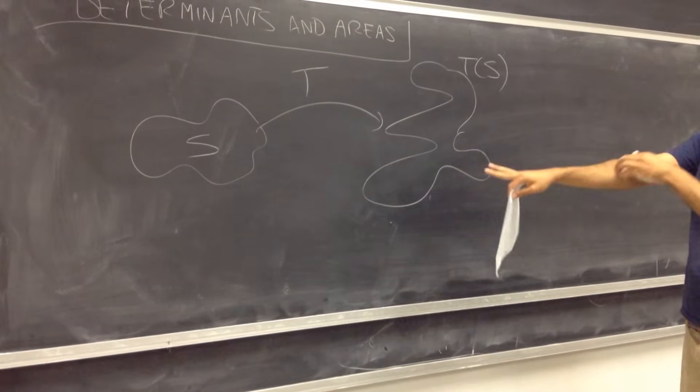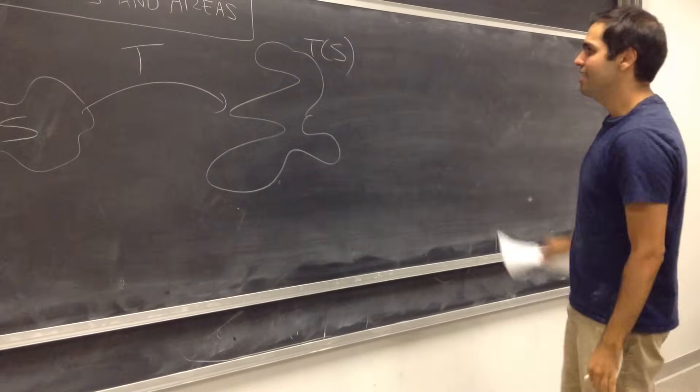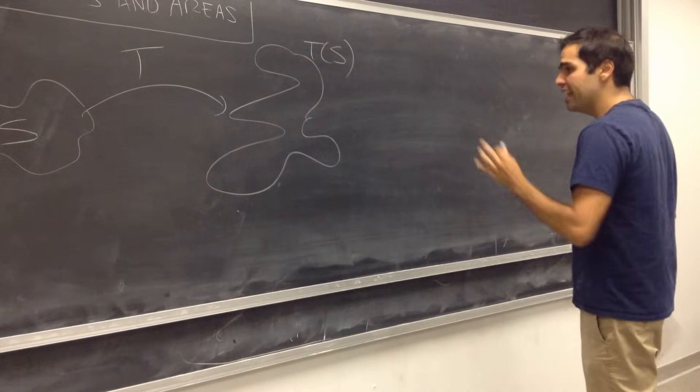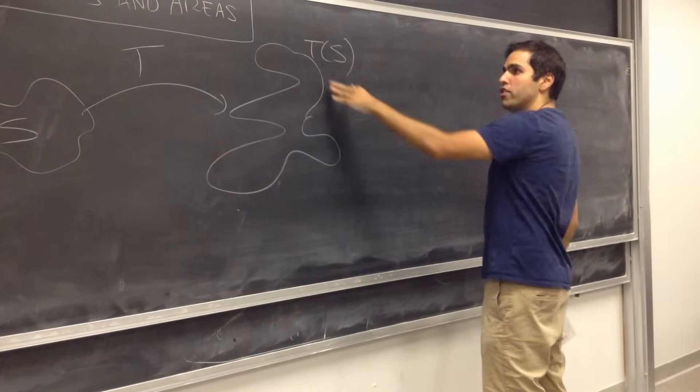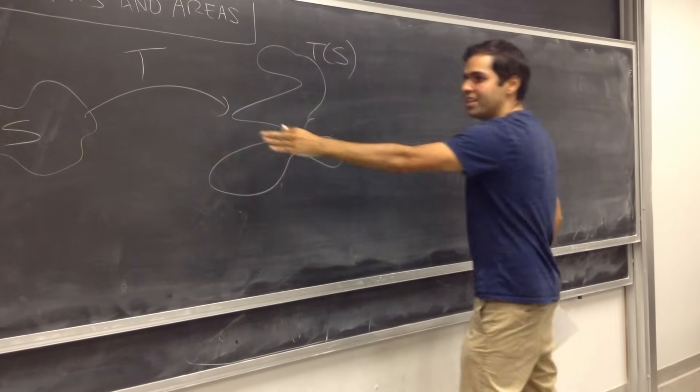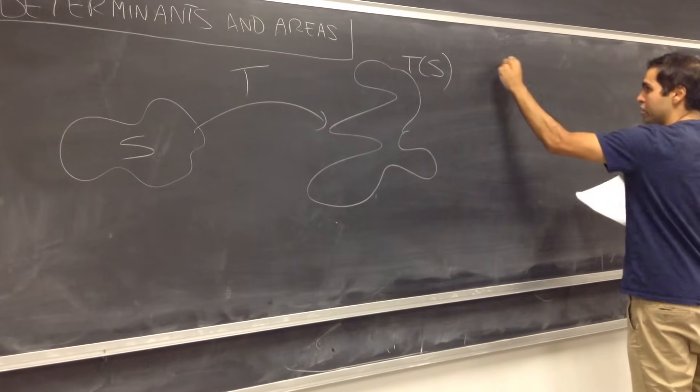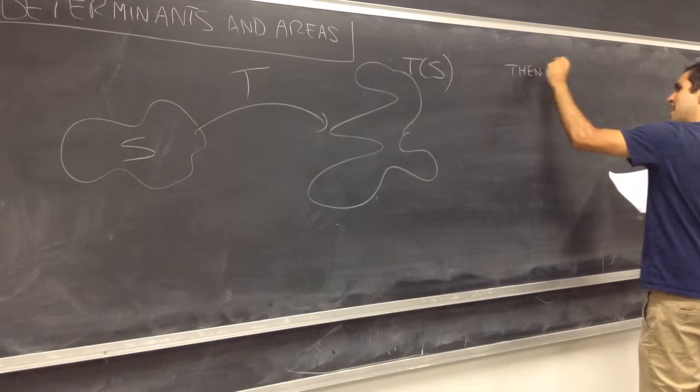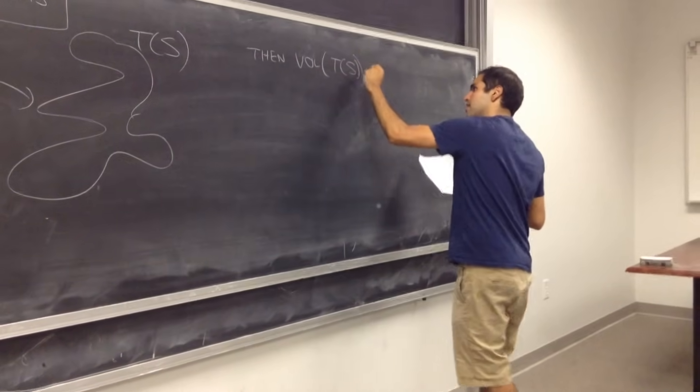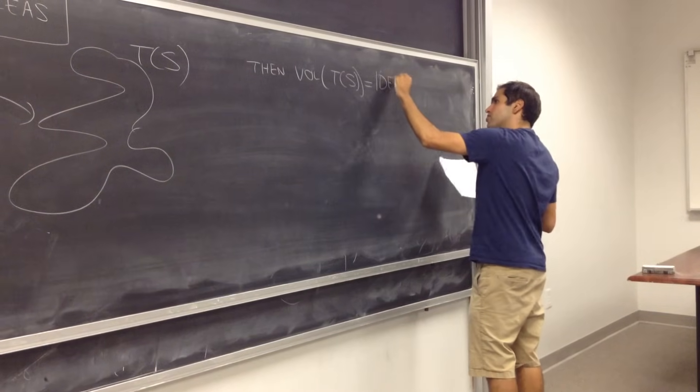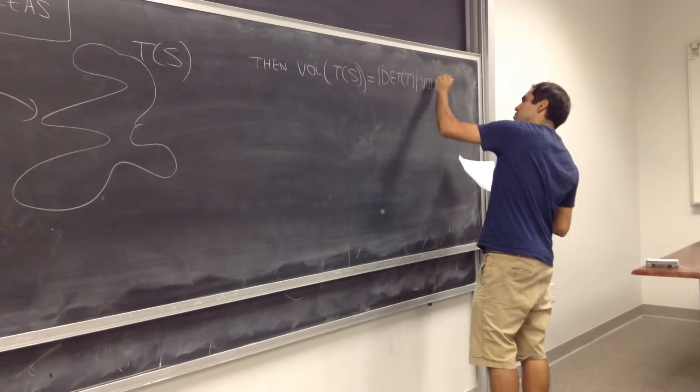Again, it's a linear hurricane, so it might not look weird like that. It might look like a shear of S or some rotation of S. It turns out that there's a nice expression of the area of this new object in terms of the area of the old object, I guess volume.